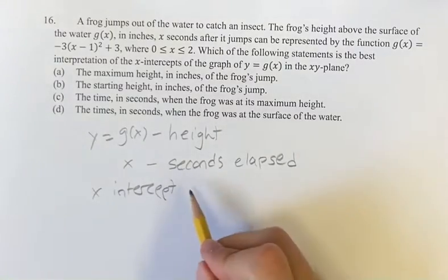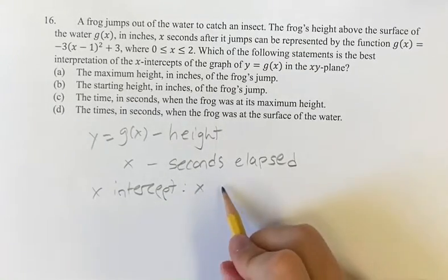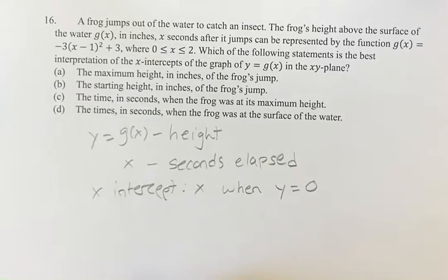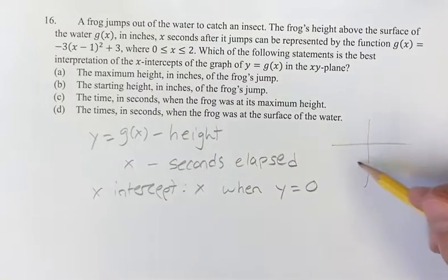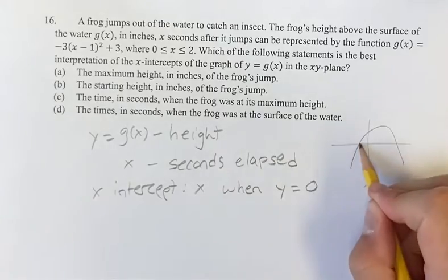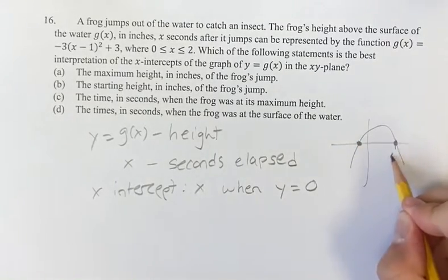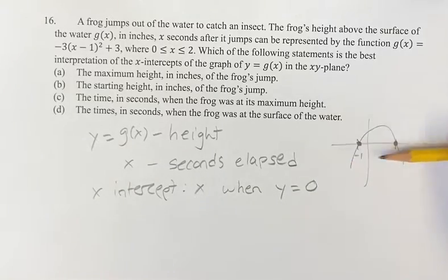So what is the x-intercept? In general, the x-intercept is the value of x when y is equal to 0. In comparison, the y-intercept is y when x is equal to 0. For this function, the x-intercepts would be the values of x — say 4 and maybe negative 1 — when y is equal to 0, right at the x-axis.